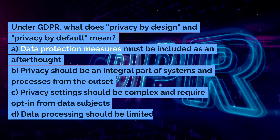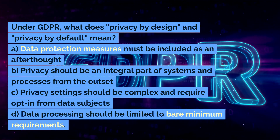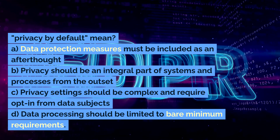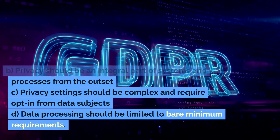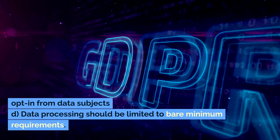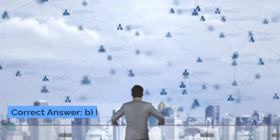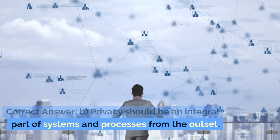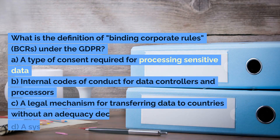Under GDPR, what does privacy by design and privacy by default mean? A. Data protection measures must be included as an afterthought. B. Privacy should be an integral part of systems and processes from the outset. C. Privacy settings should be complex and require opt-in from data subjects. D. Data processing should be limited to bare minimum requirements. Correct answer: B. Privacy should be an integral part of systems and processes from the outset.